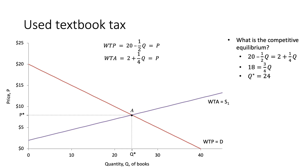Q* is equal to 24. Once we find that, we plug this into either equation. In the willingness to pay function we get 20 minus 12 equal to 8, and plugging into the willingness to accept we get 2 plus 6 also equal to 8, giving us P* equal to 8. So we set the equations equal to each other where willingness to pay equals willingness to accept, and this gives us our competitive equilibrium.